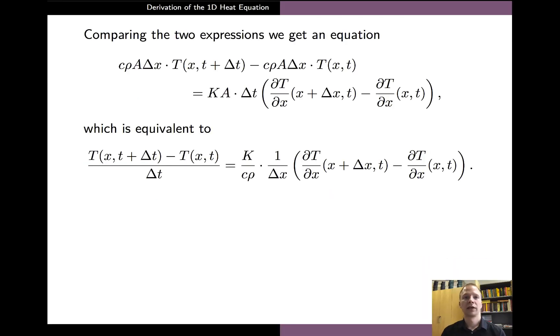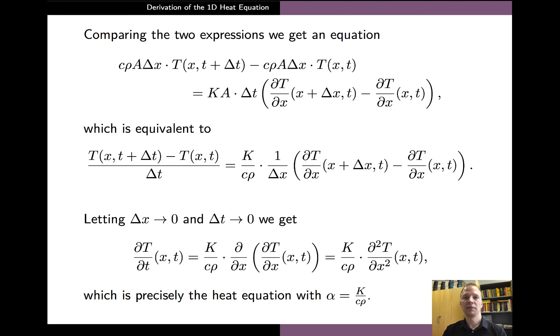And comparing and equating these two expressions, we arrive at the first equation on the slide. And if we divide both sides of the equation by delta t and delta x, and move all of the physical parameters on the right hand side, then we arrive at the following equation here. And we already assumed that delta t and delta x are both small. And if we let both of them approach zero,